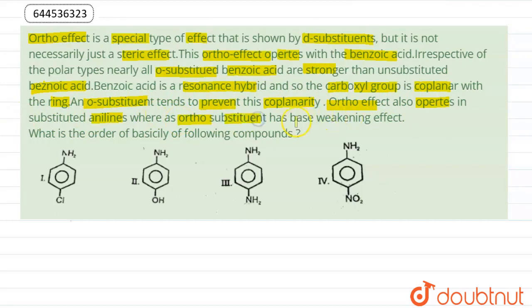Where ortho substituent has base weakening effect. This is the paragraph about ortho effect. Now the question is: what is the order of basicity of the following compounds? We are given total four compounds: para-chloroaniline, para-aminophenol,